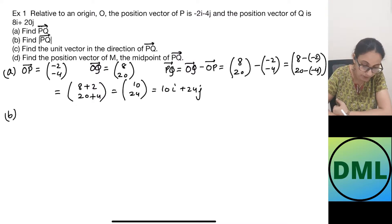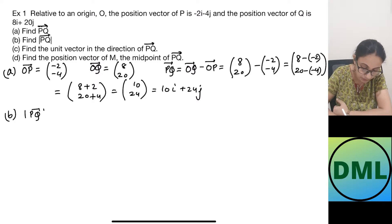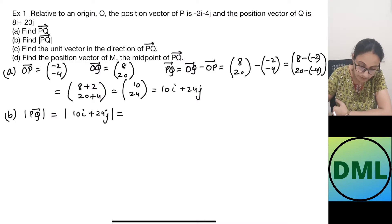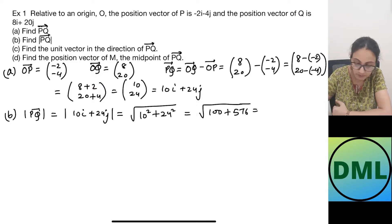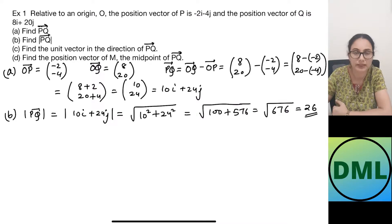Now I need to find the modulus of PQ. The modulus of PQ is the modulus of 10i plus 24j, which can be written as the square root of 10 squared plus 24 squared. That equals the square root of 100 plus 576. Adding up gives 676, and taking the square root gives 26.